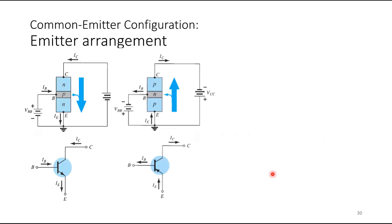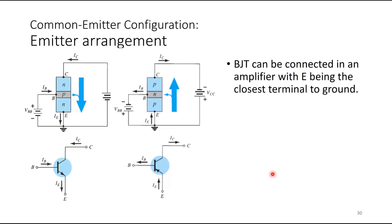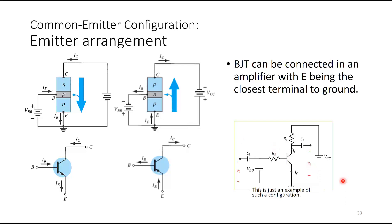We are going to go through the same flow. This is the common emitter arrangement — a BJT can be connected in an amplifier with the emitter being the closest terminal to the ground. You may have another component between the emitter and the ground, but it is still the closest to the ground. For NPN, the N side of the emitter is closest to ground; for PNP, the P side is closest to ground.